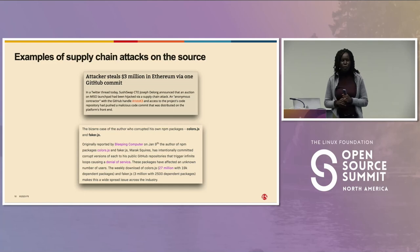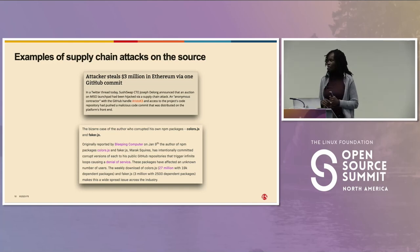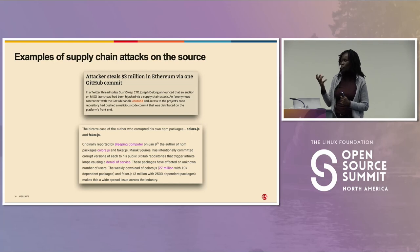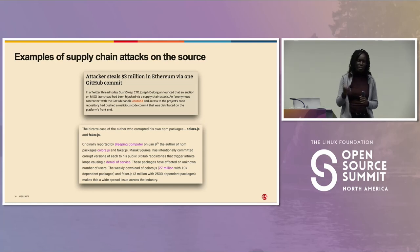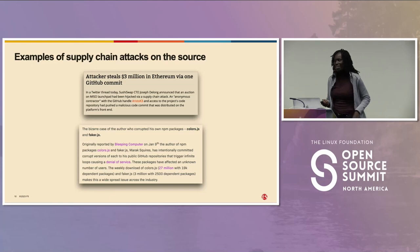Examples of source-level exploits: one malicious actor got into a particular GitHub repository and made a commit, making off with an estimated three million dollars worth of Ethereum. Another example is the so-called 'protestware' case, where a maintainer of the widely-used 'colors' and 'faker' libraries introduced an infinite loop — almost like a denial of service — causing the projects to stop working. This is a case where the maintainer themselves caused the damage.